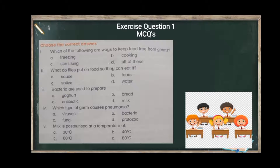The second part asks: what do flies put on food so they can eat it? The options are sauce, tears, water, and saliva. Flies cannot give sauce, tears, or water. The answer is saliva — the fluid from their mouth. After landing on food, they put their feet in their mouth, transferring germs.